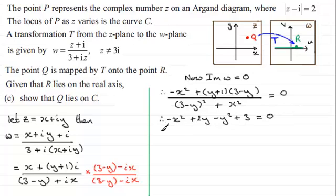And if I rearrange this, I'm going to get X squared, then plus Y squared, and then minus 2Y, and then minus 3. And that's going to equal 0.